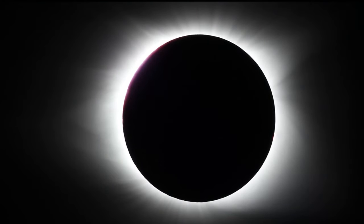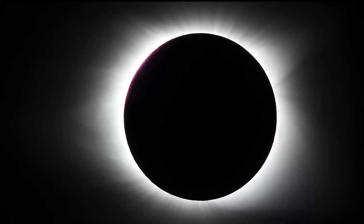When the Moon blocks the diamond ring effect, we see the full total eclipse. And the corona is visible.